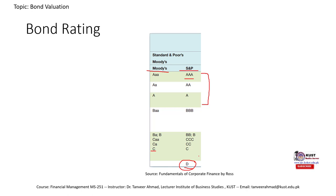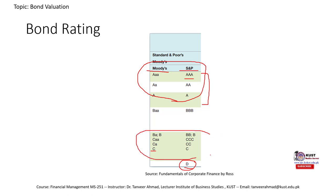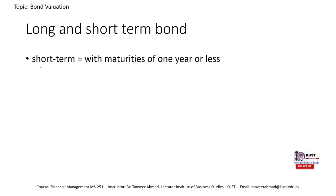Bonds that are more likely to fail in paying their interest or principal amount carry more risk. Bonds in the higher rating spectrum have lesser credit risk or default risk. Those with a lower rating have higher default risk. Because their risk is less, their return would also be less — so triple-A rated bonds pay less to bondholders compared to bonds in lower rating categories.